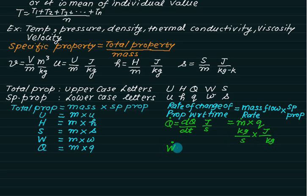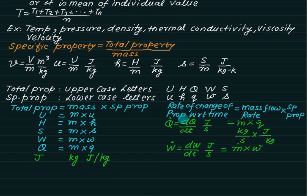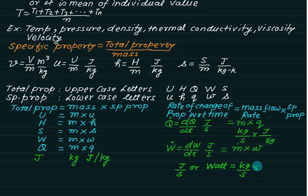Similarly, the rate of change of work dW/dt, also in J/s or Watts, is called power and equals mass times specific work w. When studying thermodynamics, be very careful with units: total property has units of Joules, mass is in kg, specific property is in J/kg, and rate of change is in J/s or Watts, which equals mass flow rate in kg/s multiplied by specific property in J/kg.